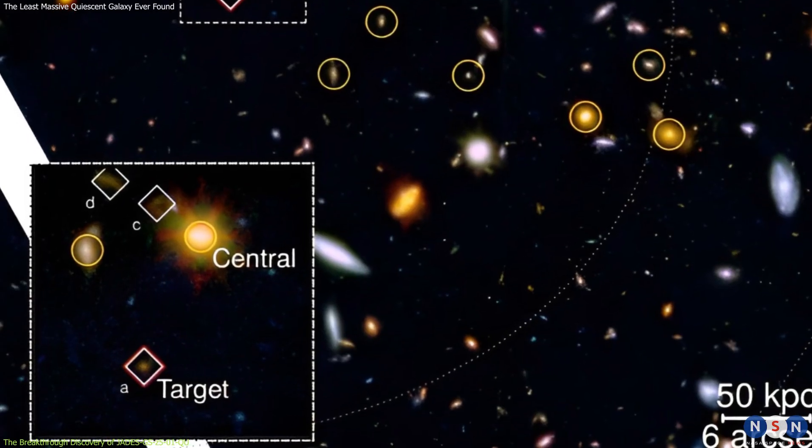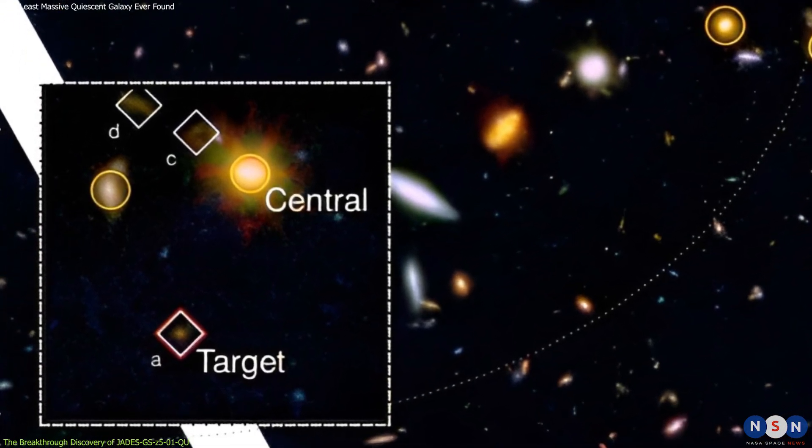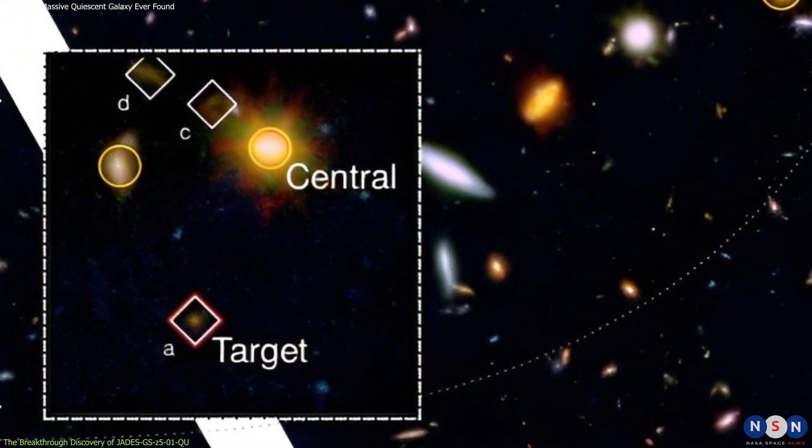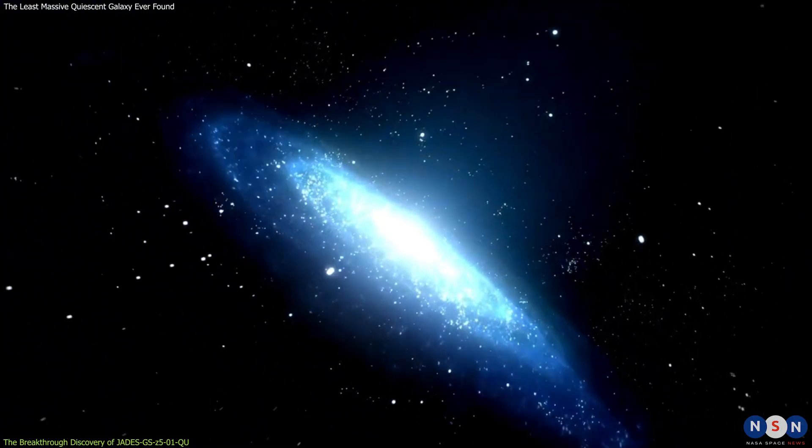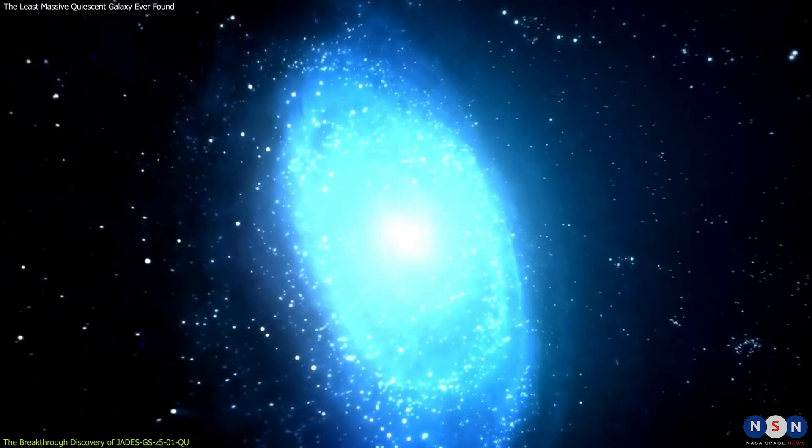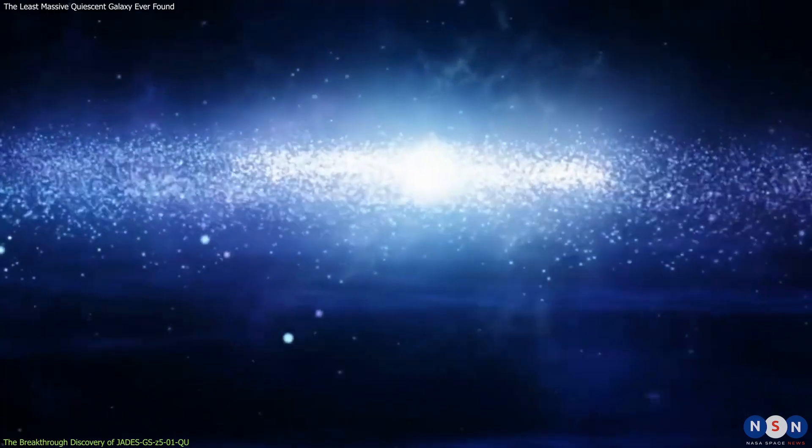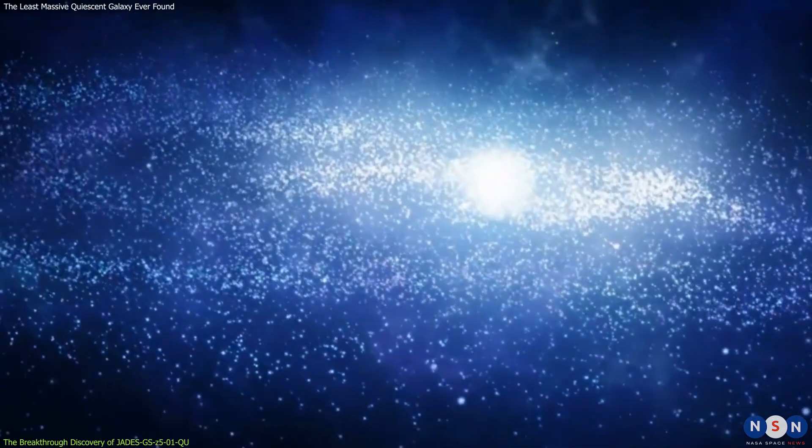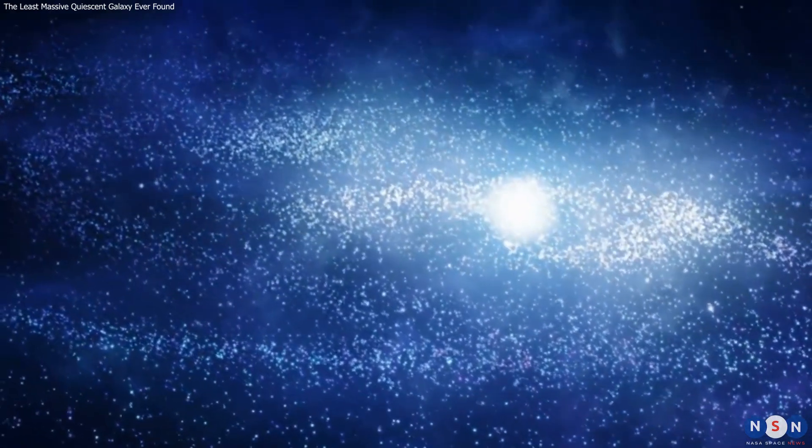This galaxy is very important and exciting because it challenges our understanding of how quiescent galaxies form and evolve in the early universe. How can such a low mass galaxy stop forming stars so early and rapidly? What processes are responsible for quenching its star formation? How does it compare with other quiescent galaxies at similar or lower redshifts?